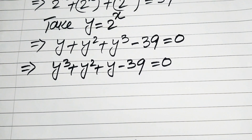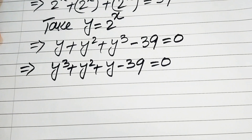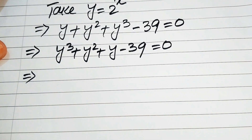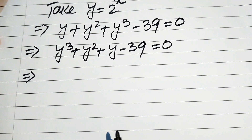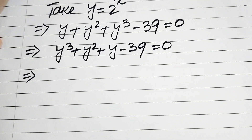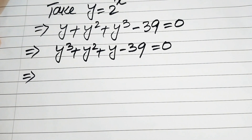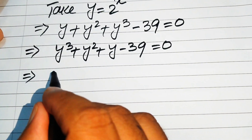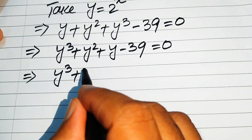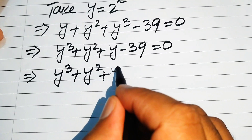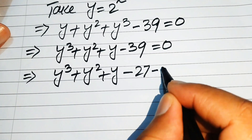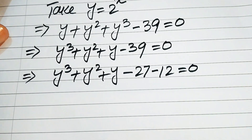This is now a cubic equation. We will find the factors without using synthetic division. We break minus 39: the equation becomes y cubed plus y squared plus y minus 39, and we write minus 39 as minus 27 minus 12, so the equation equals 0.